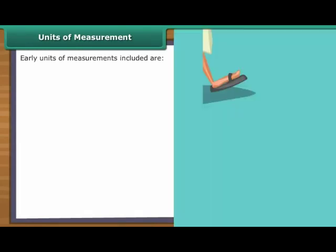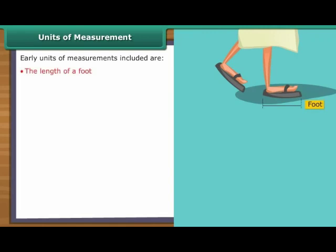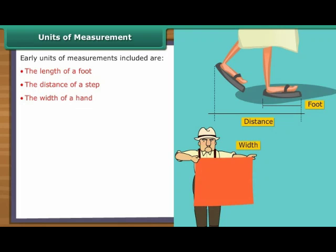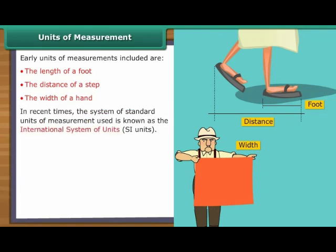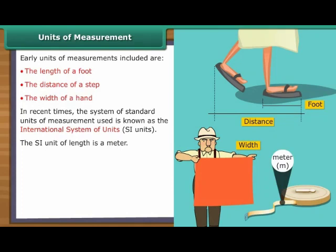Units of Measurement. In the early days, units of measurements included the length of a foot, the distance of a step and the width of a hand. However, these were difficult to maintain as the length of a foot would vary from person to person. To standardise the units, a metric system was put in place. This system is a standard unit of measurement and the system of standard units of measurement used now is known as the International System of Units or SI Units.